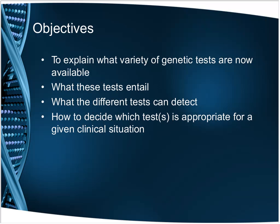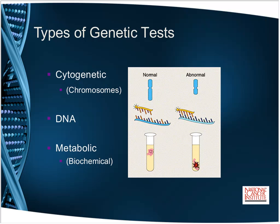Today I'm going to talk about the types of genetic tests that are available, what the tests entail, what the different tests can detect, and how to decide which test or tests are appropriate for a given clinical situation. When we talk about genetic tests, we can talk about chromosome tests, called cytogenetic tests; DNA tests, sometimes called molecular tests; and biochemical tests for various metabolic disorders. We're only going to talk about cytogenetic and molecular tests today.